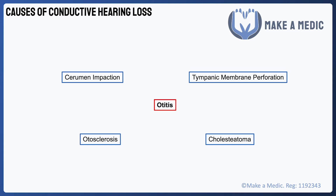Otitis means ear inflammation, and the two main types are externa and media. Otitis externa involves inflammation of the ear canal, which may be due to a bacterial infection or due to allergies and even autoimmune disorders in chronic cases. The inflammation can result in swelling and discharge severe enough to block the ear canal. Otitis media is inflammation of the middle ear, where the discharge can again cause conductive hearing loss, and one particular form, chronic suppurative otitis media, is actually a cause of tympanic membrane perforation.